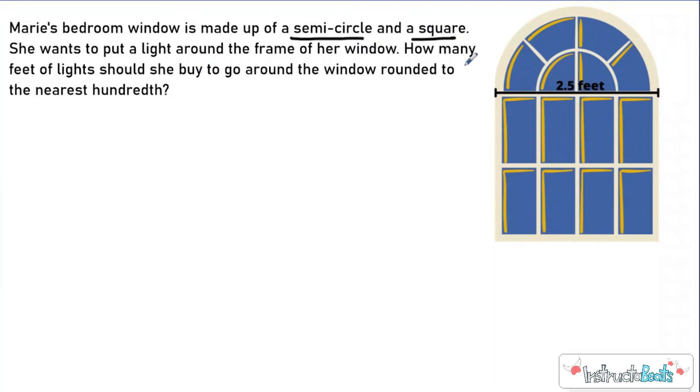She wants to put a light around the frame of her window. So when I see around the frame of her window, I'm automatically thinking about perimeter. And even though a circle doesn't have a true perimeter, I'm thinking about circumference as well. How many feet of light should she buy to go around the window? And I want to round that to the nearest hundredth. So a lot of times with these types of questions, they'll give you a real-world problem like this, and you're going to have to decompose the shape. It said right here that it's made up of a semicircle, which you can kind of see the outline, and then a square. So this is actually a much simpler problem than we think. But this is a typical question that they're going to ask you to test your circle knowledge.